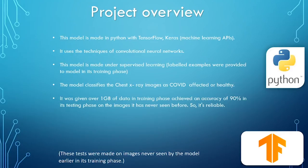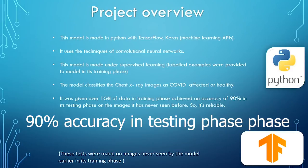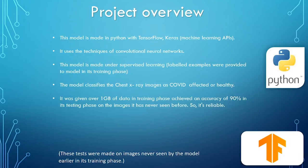This model is made with Python using TensorFlow and Keras, the machine learning APIs. It uses the technique of Convolutional Neural Networks, in short CNN. The model is made under supervised learning, meaning it was provided with labeled examples during its training phase. The model classifies chest X-ray images as COVID-19 affected or healthy. It was given over one GB of training data and achieved an accuracy of over 90 percent in its testing phase.